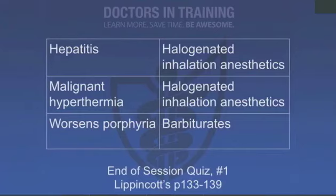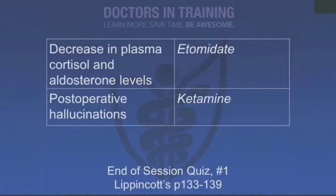We're back for the end of session quiz. Which drug class is associated with the following side effects? Hepatitis — think halogenated inhaled anesthetics like halothane. Malignant hyperthermia — same, halogenated inhaled anesthetics like halothane. Worsens porphyria — barbiturates. Increase in plasma cortisol and aldosterone levels — that's etomidate. Post-operative hallucinations — ketamine, because it's very similar to PCP.